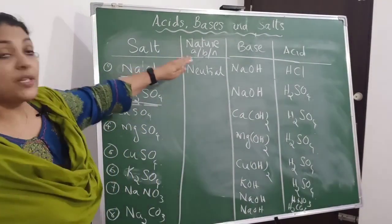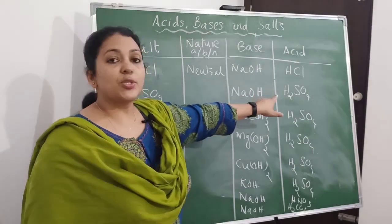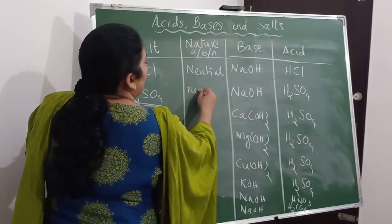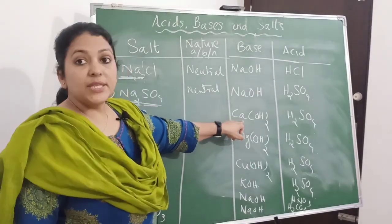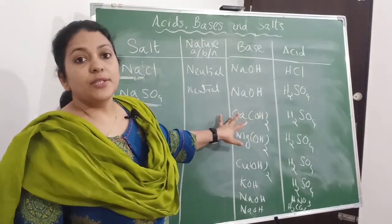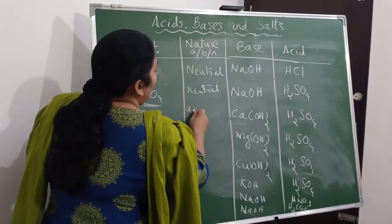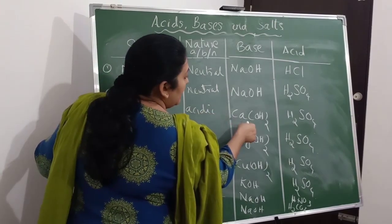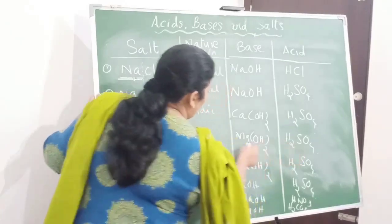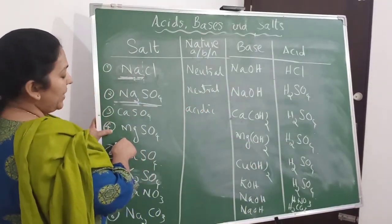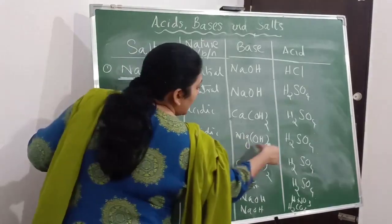Now let's determine the nature of each salt. Sodium sulfate is formed from a strong base and a strong acid, therefore it is neutral. Calcium sulfate: calcium hydroxide is a weak base and sulfuric acid is a strong acid, therefore the salt formed will be acidic. Magnesium sulfate is also formed from a weak base and a strong acid, so it is also acidic.